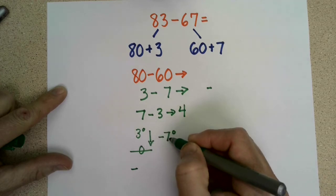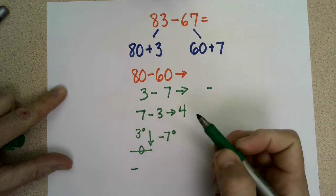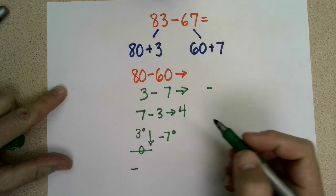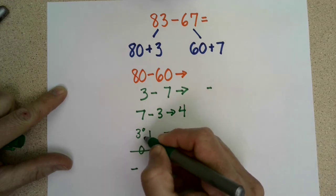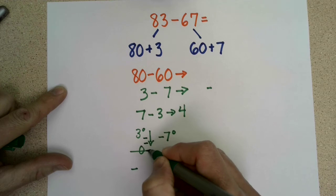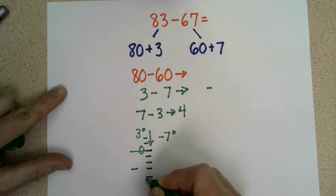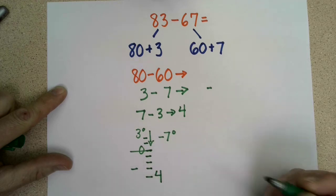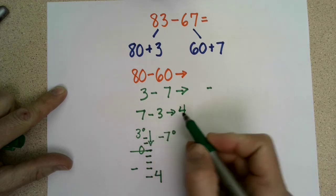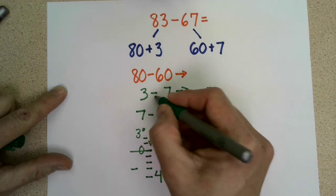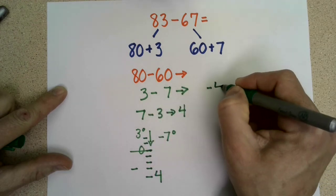So 3 minus 7 is very similar to 7 minus 3, except our answer is negative. So we would go down from 3 to 2 to 1 to 0, that would be 3, and then we'd go down negative 1, negative 2, negative 3, negative 4 is where we would end up. So 3 minus 7 would be negative 4.